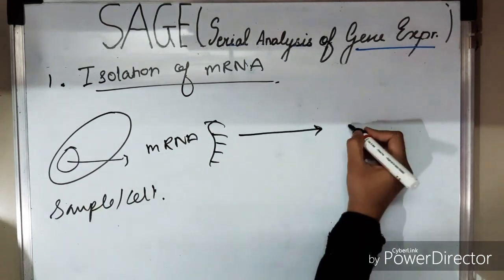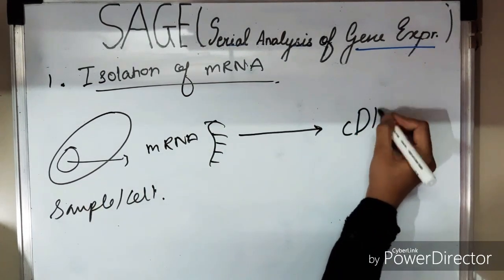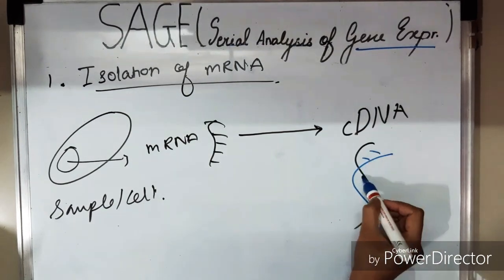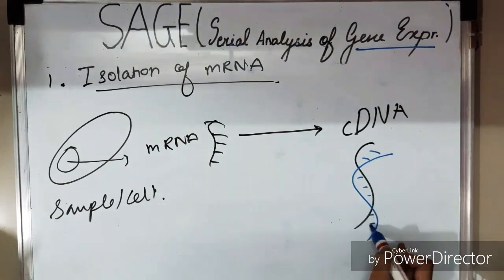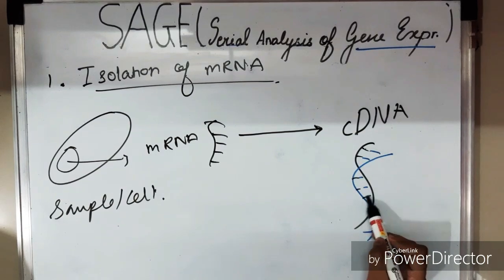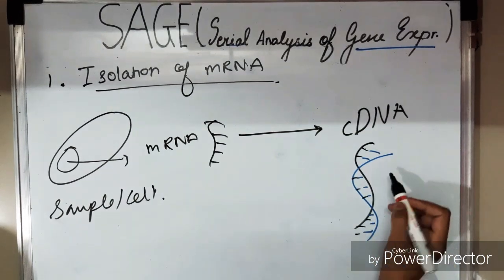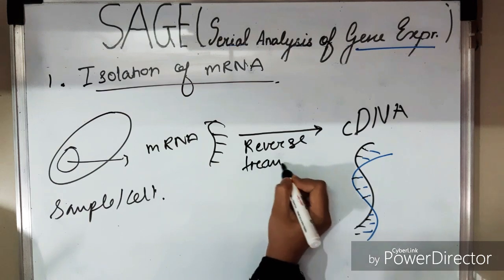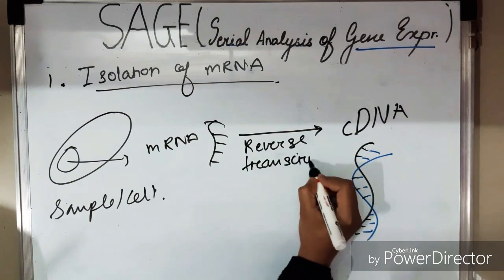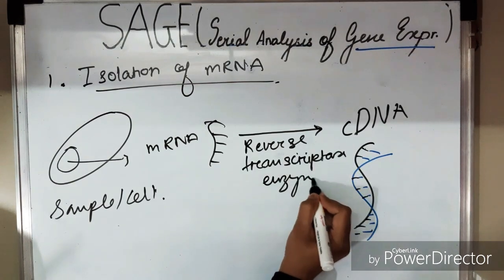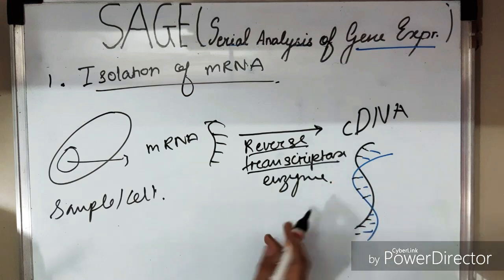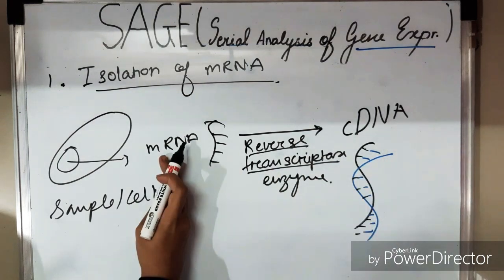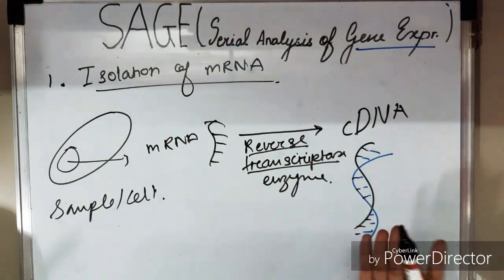Once the mRNA is isolated, we need to synthesize cDNA from it. In this process we use reverse transcription — specifically an enzyme called reverse transcriptase — which enables us to synthesize cDNA from the mRNA isolated from the sample of interest.